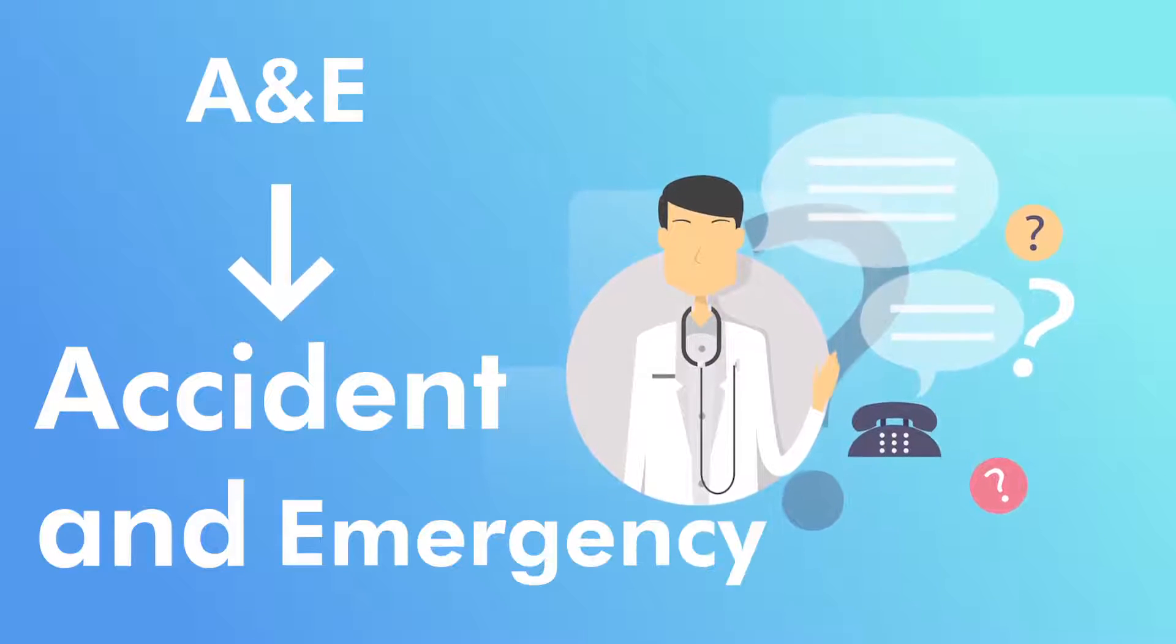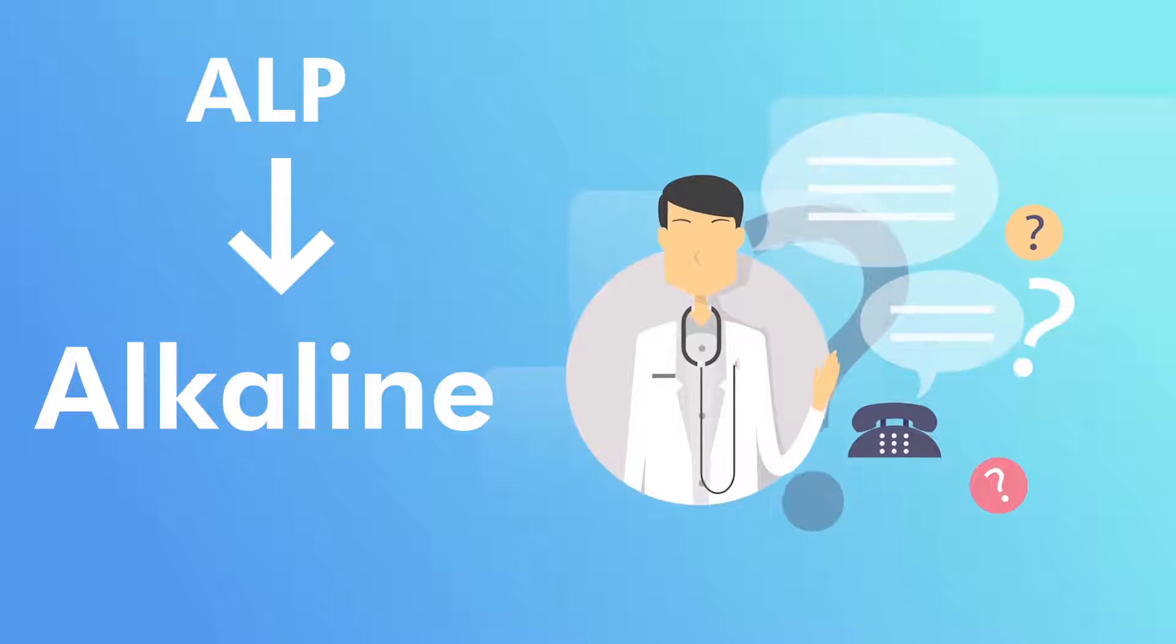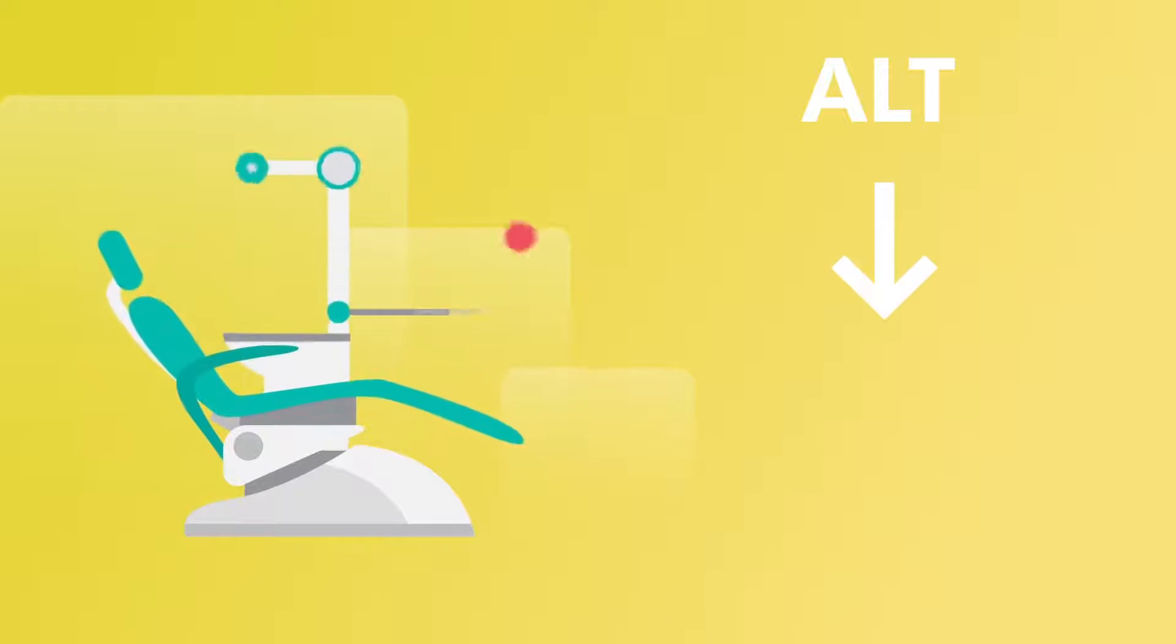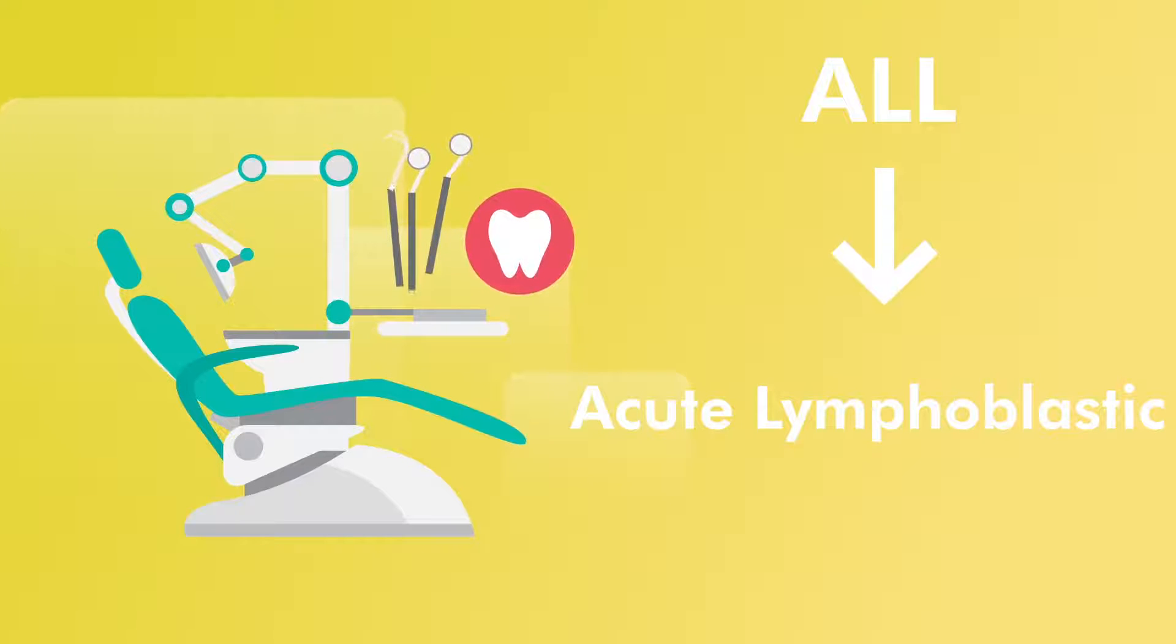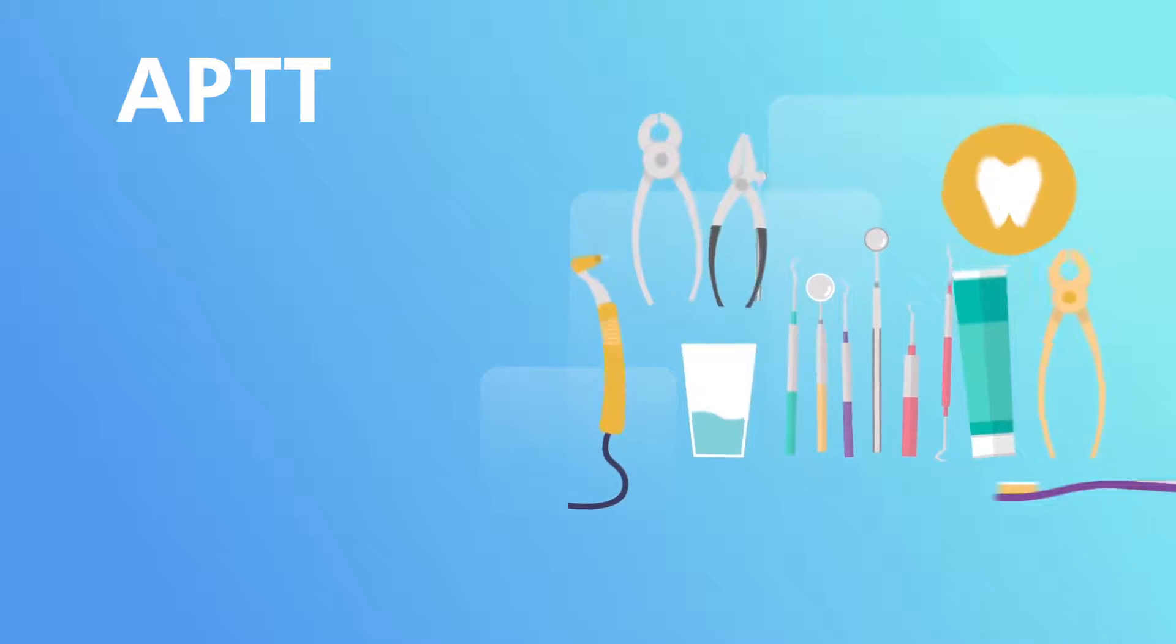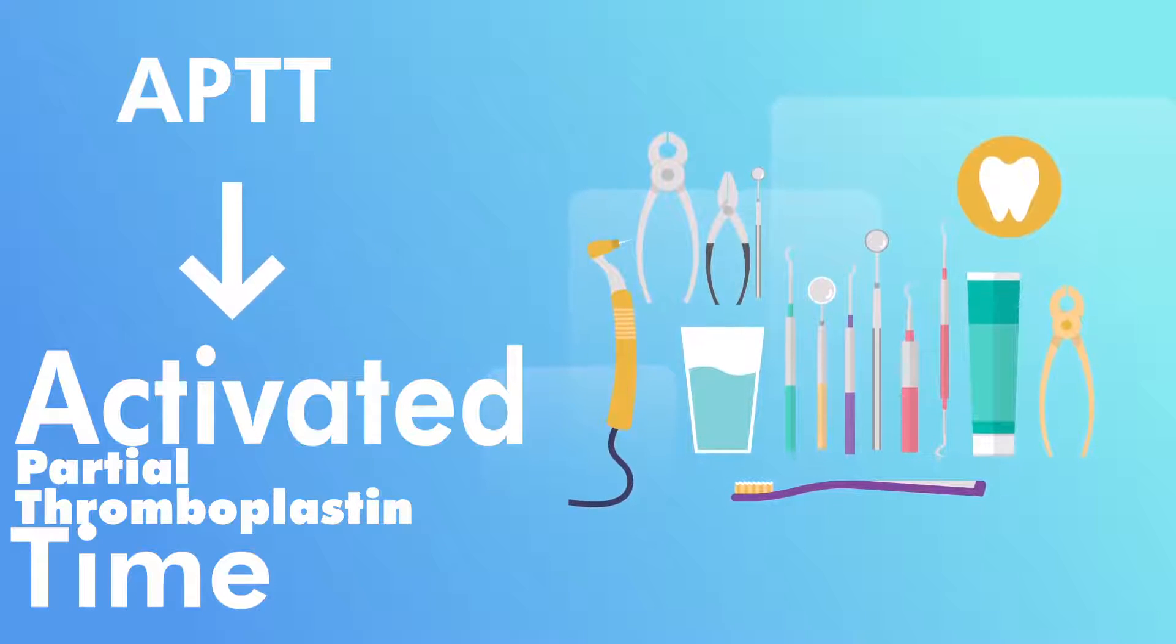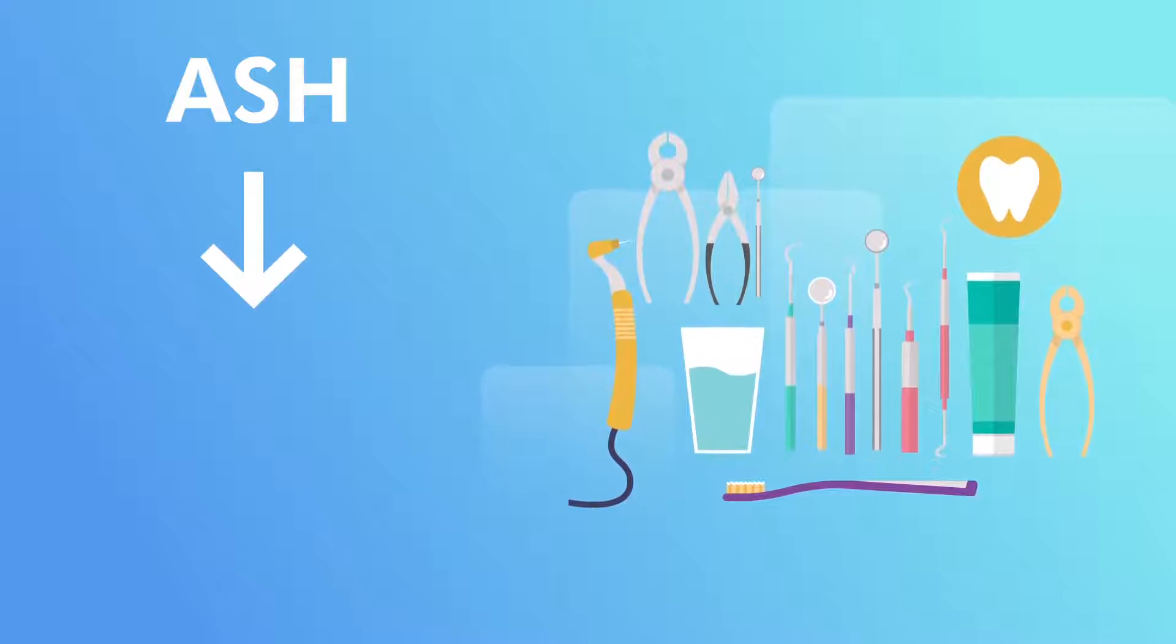A&E, accident and emergency. AOB, anterior open bite. ALP, alkaline phosphatase. ALT, alanine transaminase. ALB, albumin. AML, acute myeloid leukemia. ALL, acute myeloid lymphoblastic leukemia. ANA, anti-nuclear antibodies. ANS, anterior nasal spine. ANUG, acute necrotizing ulcerative gingivitis. APTT, activated partial thromboplastin time. ASA, American Society of Anesthesiologists. ASH, action on smoking and health.